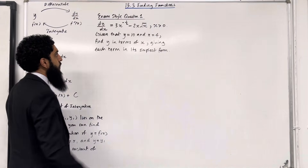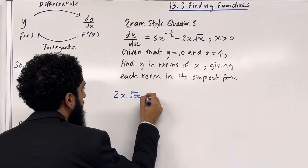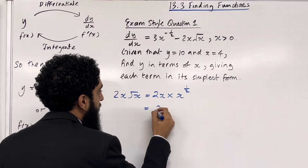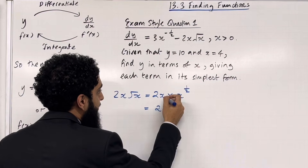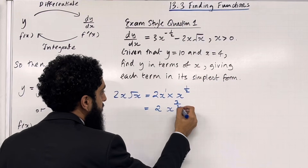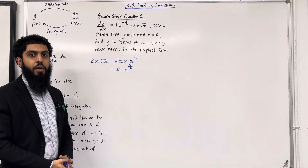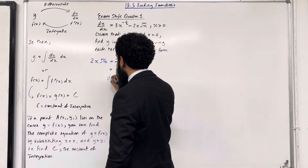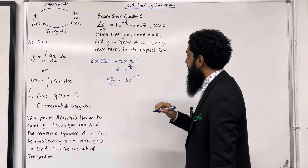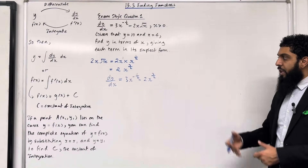First, I'm going to rewrite the second term so that it can be integrated. We've got 2x√x, which is rewritten as 2x multiplied by x^(1/2). The power of x is 1, so we have 1 plus 1/2, giving x^(3/2). So 2x√x can be rewritten as 2x^(3/2). Now I rewrite dy/dx as 3x^(-1/2) minus 2x^(3/2), so both terms are ready to be integrated.